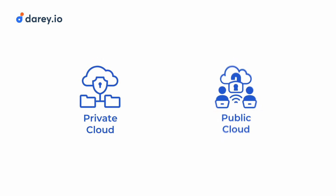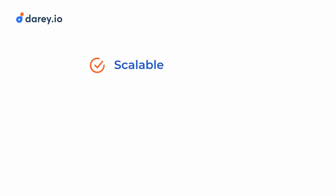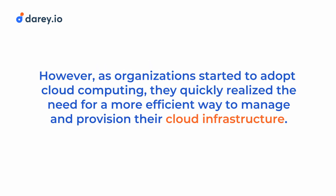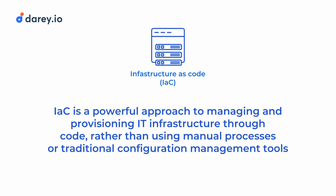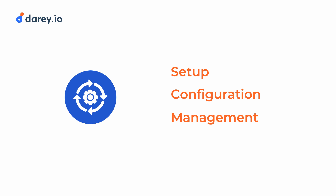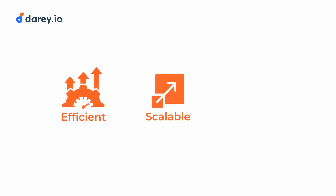Both private and public cloud offerings aim to address the challenges of traditional IT setups by providing scalable, on-demand resources and a pay-as-you-go pricing model. However, as organizations started to adopt cloud computing, they quickly realized the need for a more efficient way to manage and provision their cloud infrastructure. This is where infrastructure as code comes in. IAC is a powerful approach to managing and provisioning IT infrastructure through code, rather than using manual processes or traditional configuration management tools. With IAC, you can automate the setup, configuration and management of your infrastructure, making it more efficient, scalable and reliable.